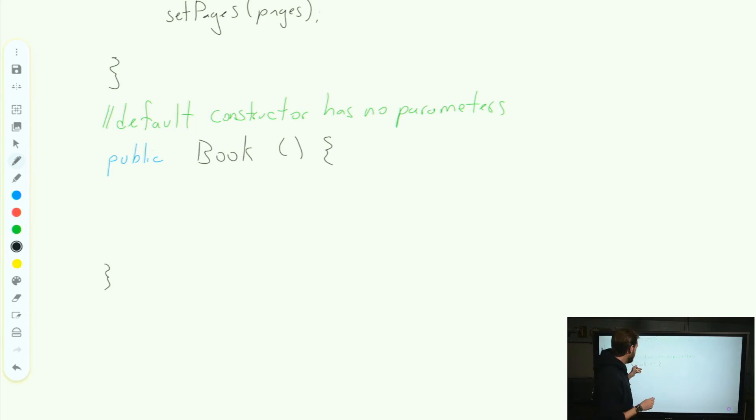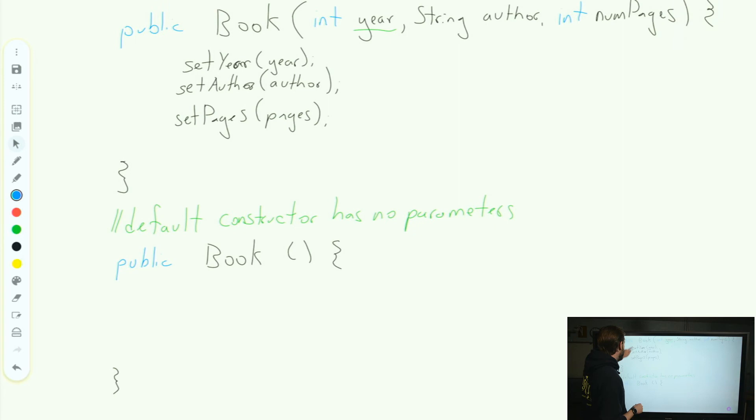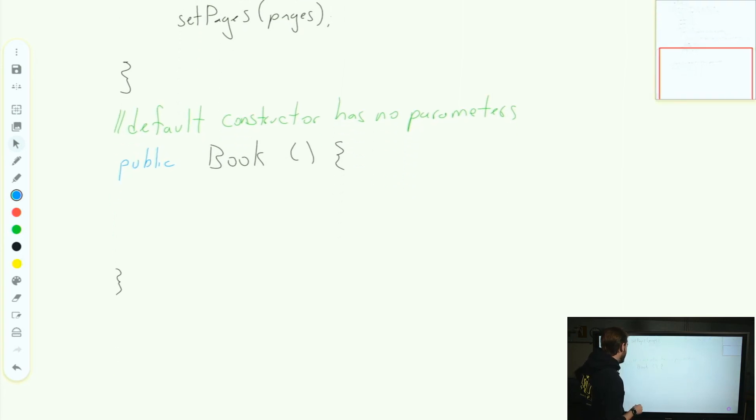Java, when it is creating our book, will look for the parameter list that matches whatever you pass in. Now, we could do these setYear, setAuthor, setPages, or we can use a new keyword called the this.